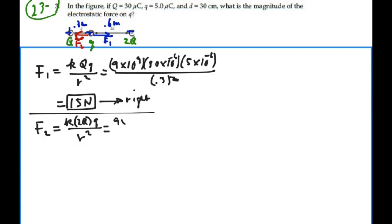9 times 10 to the 9 times 2 times 30 microcoulombs times 5 microcoulombs over the distance between them, which is 0.6 meters squared.